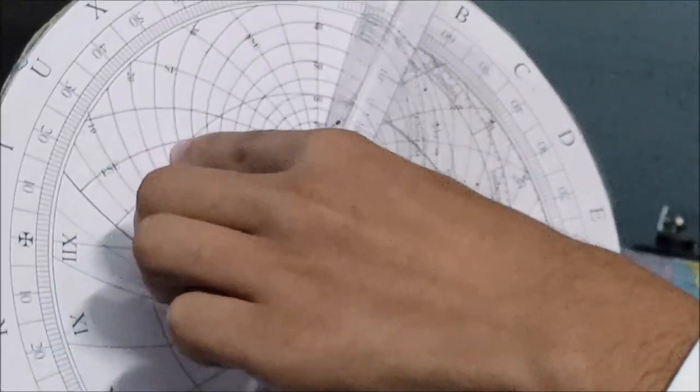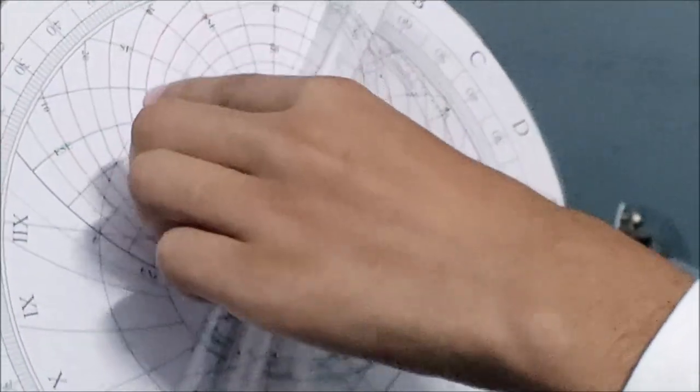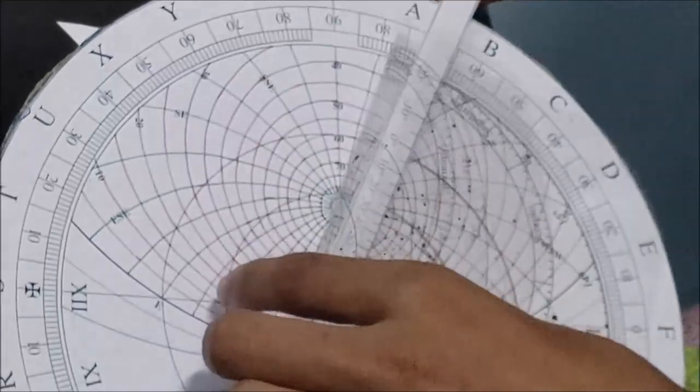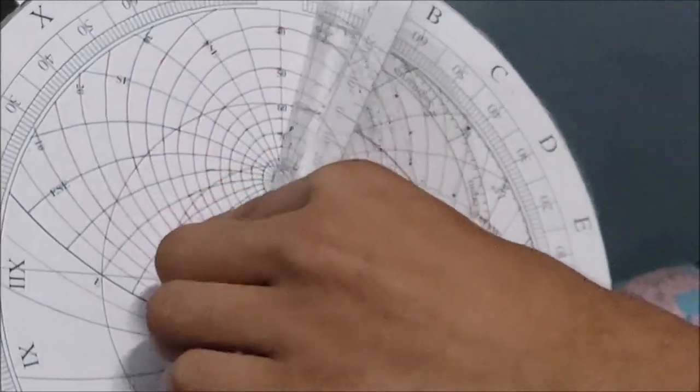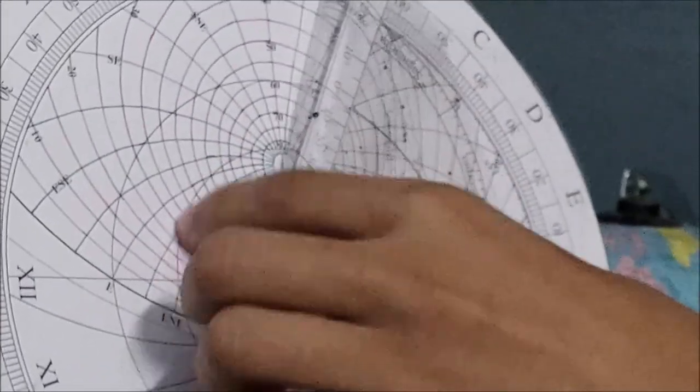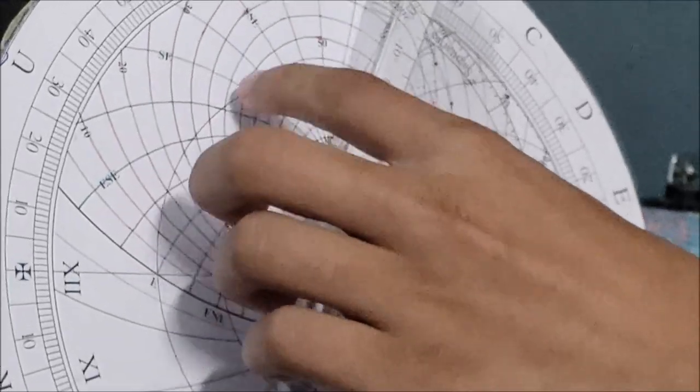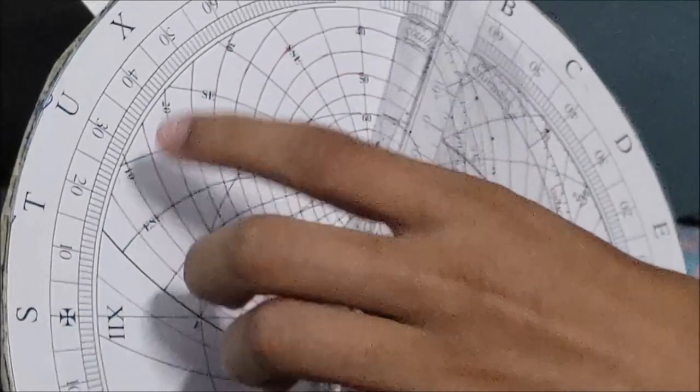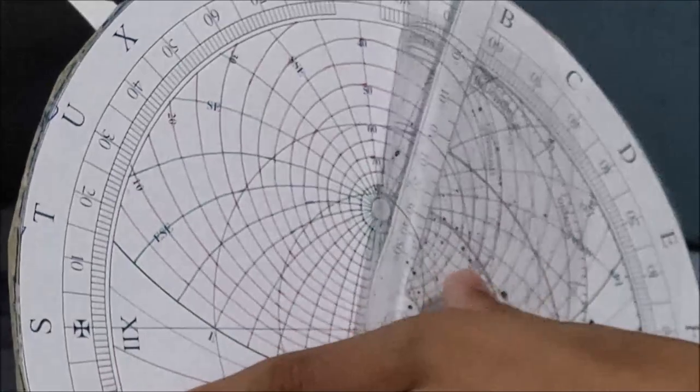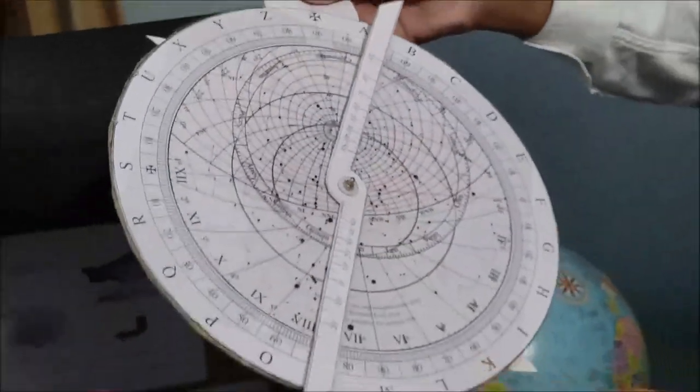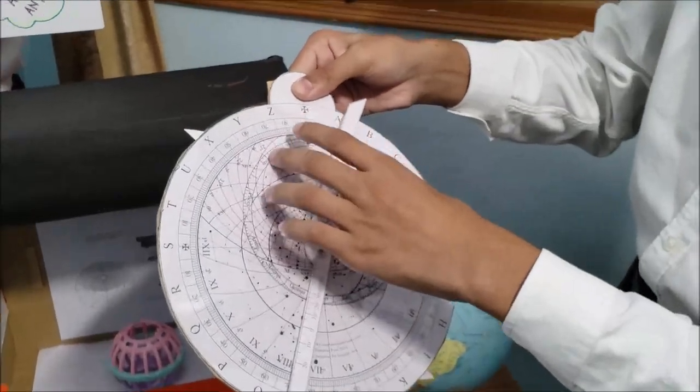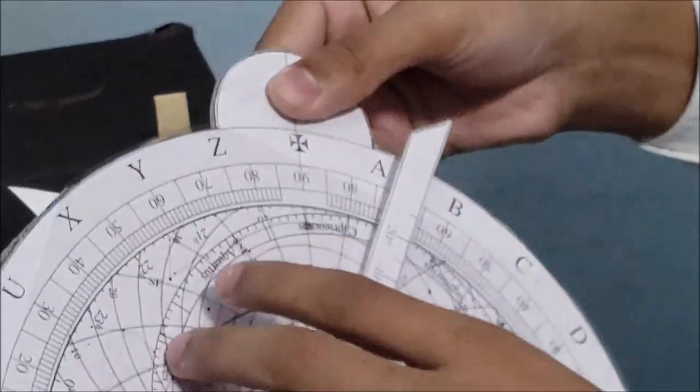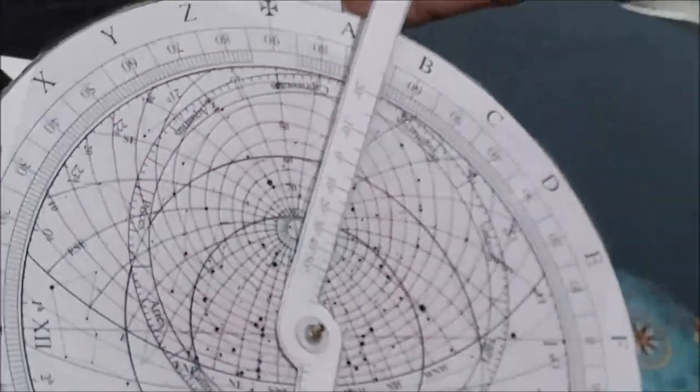This bold line is the horizon. These green lines are the latitudes and these red lines are the altitudes of the sun. Now this center circle is the tropic of cancer. This is the equator and this is the tropic of capricorn. And I forgot to mention this is the ecliptic which is divided into the 12 zodiac signs.